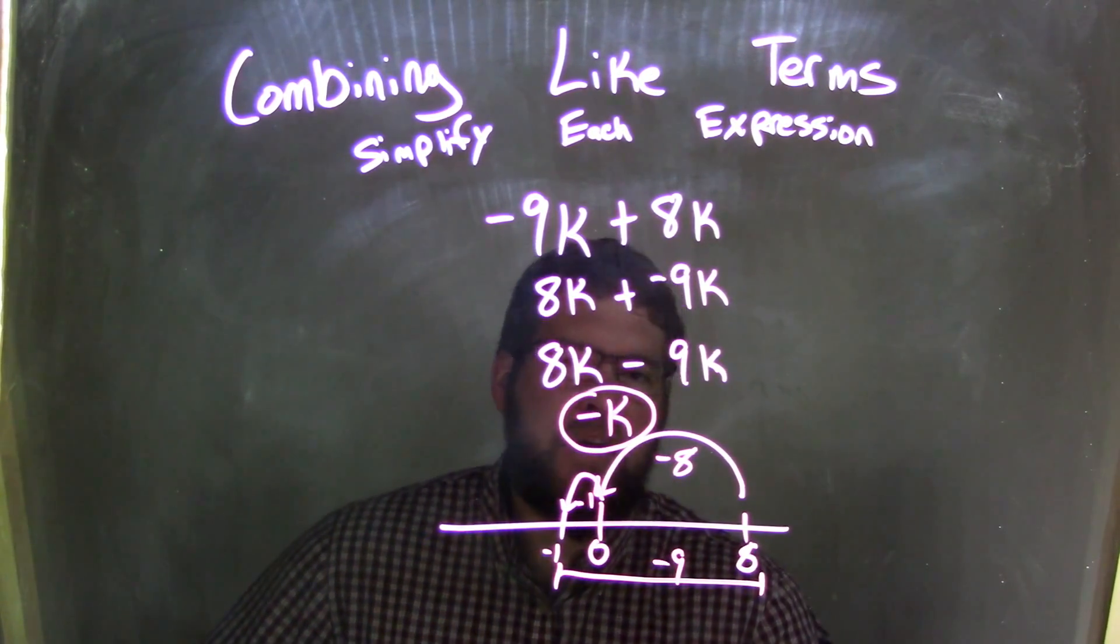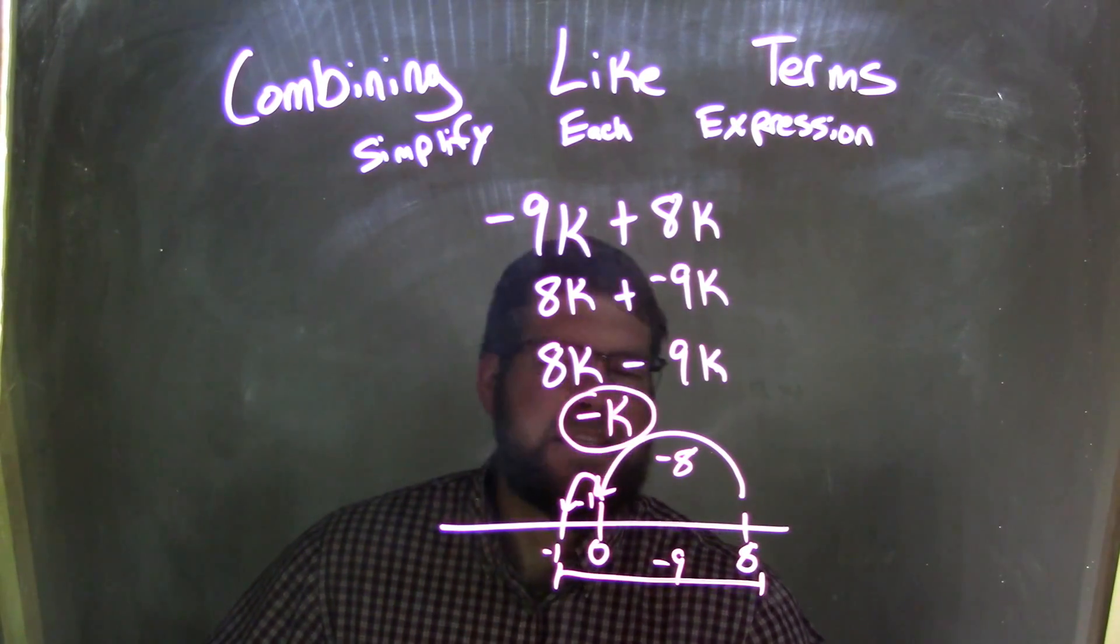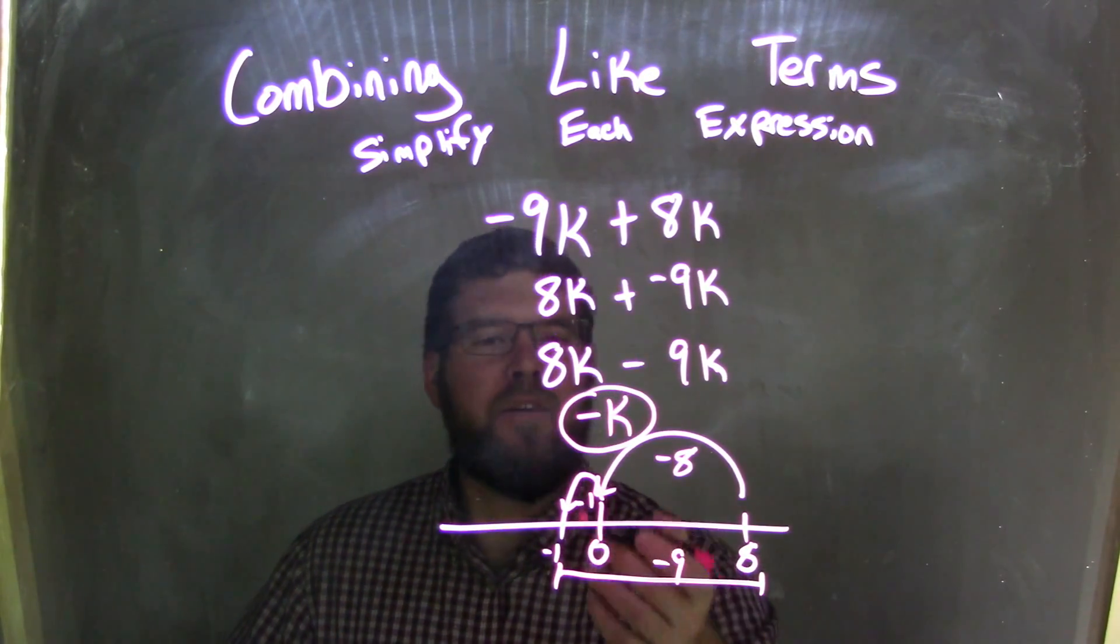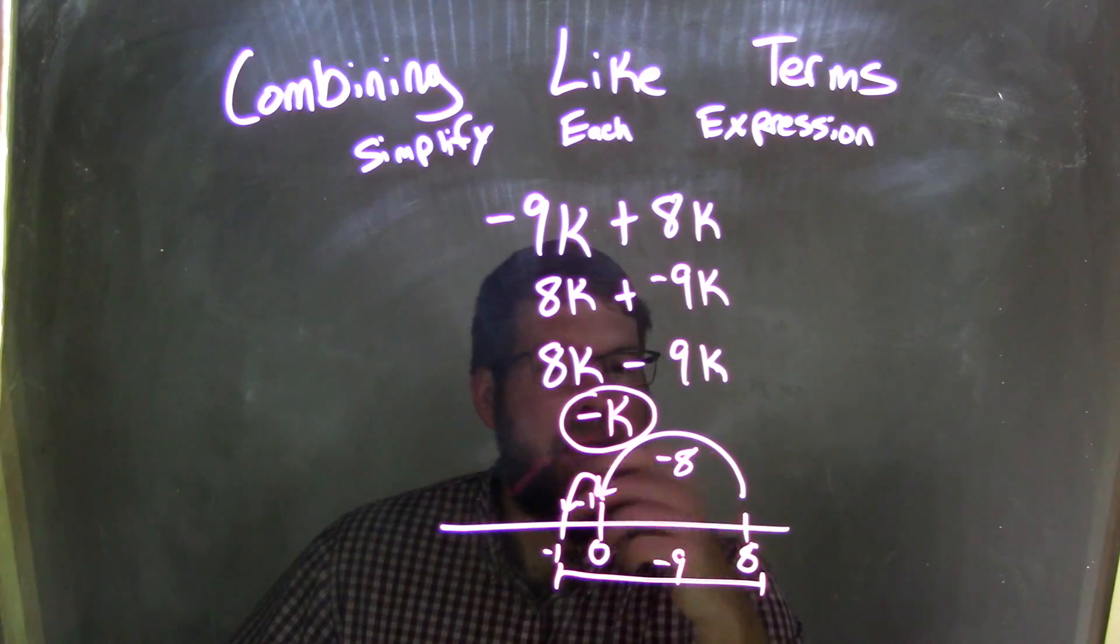Again, when we have 1 in the variable, we don't really write 1. It's just going to be k. So in this case, it's negative 1. So negative k. And that's our final answer.